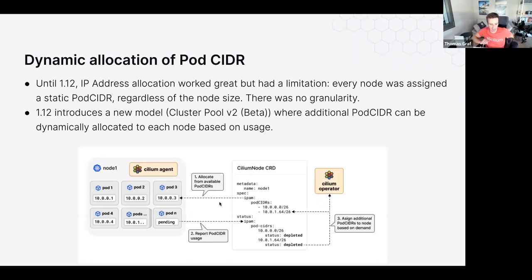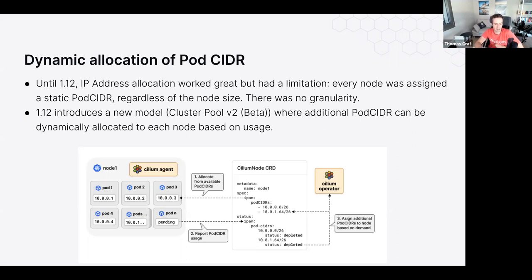Dynamic allocation of PodCIDR is now supported. Instead of one large block per node, you can assign multiple smaller blocks — /26, /28, or /30 — and nodes grab new blocks as they run out of IPs. This is the middle ground between a /24 per node (which exhausts total IP space quickly) and /32 individual IPs (which creates heavy control plane load). This is particularly useful for BGP integration, as you need to announce far fewer prefixes on the BGP network.